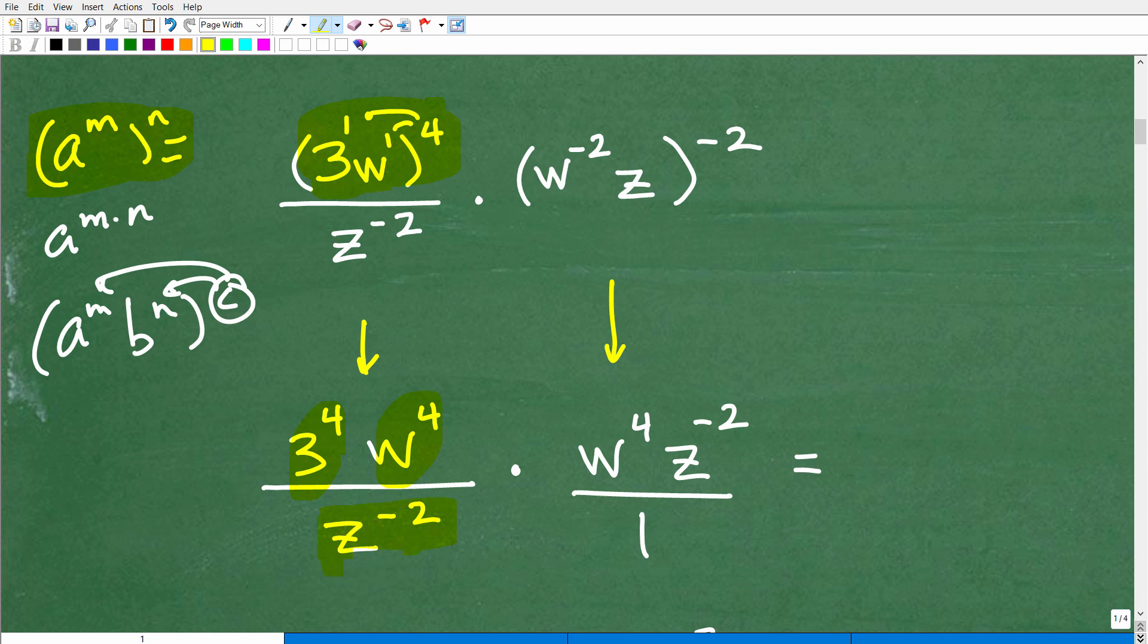Over z to the negative 2. So we're just going to take this a couple steps at a time. Okay, we're not going to try to do everything all at once. And then right here, we're going to go ahead and use this same rule. We're going to distribute this negative 2 to the powers here. Now, this z is really z to the 1st. So that's going to give us w to the negative 2 times negative 2 is positive 4. So that's w to the positive 4. z times 1 times negative 2 is z to the negative 2. And that's going to be all over 1 because I got a fraction here. So I'll put that over 1 because I'm not going to have to be dealing with fractions.